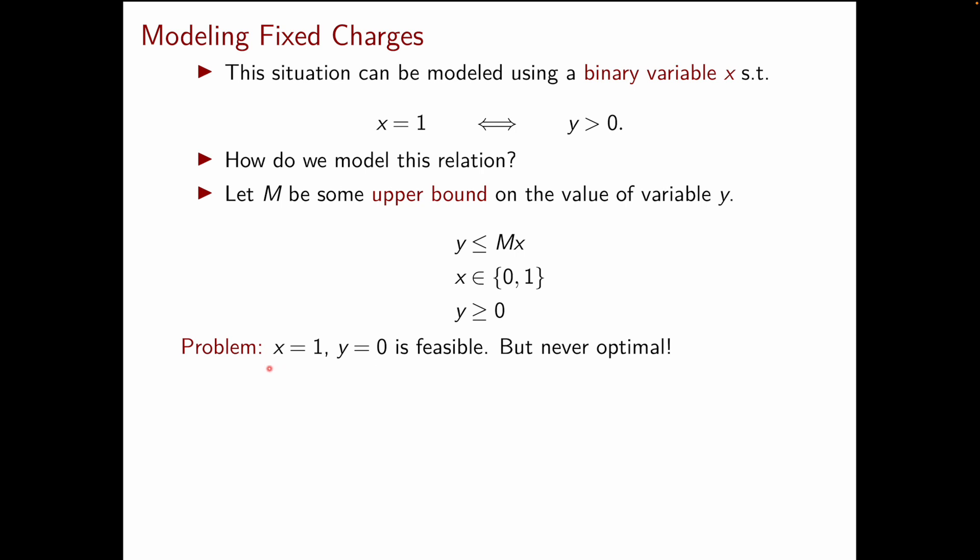But let's understand for a moment why this configuration will never be optimal. Well this is the configuration where you produce nothing because y is equal to zero. But by setting x equal to one you are still paying your fixed costs. But of course this solution will never be optimal.